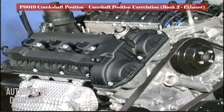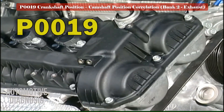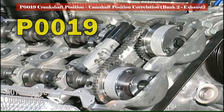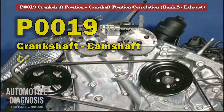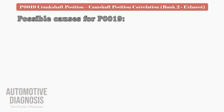The PCM monitors the engine timing misalignment while the engine is fully warmed up and there is no fault code. This happens by checking the engine timing through the crankshaft position and camshaft position sensors. P0019 will be set if the PCM detects any timing misalignment on the bank 2 exhaust side.